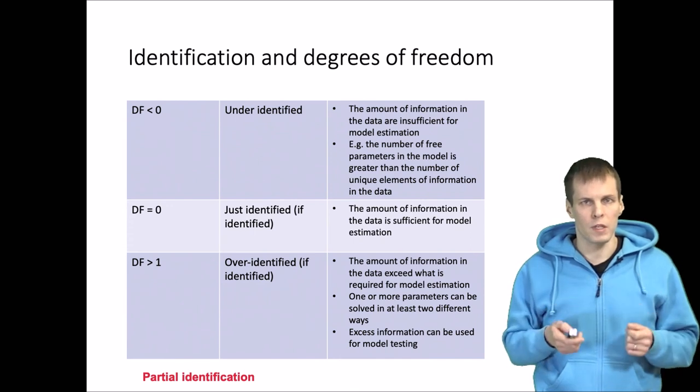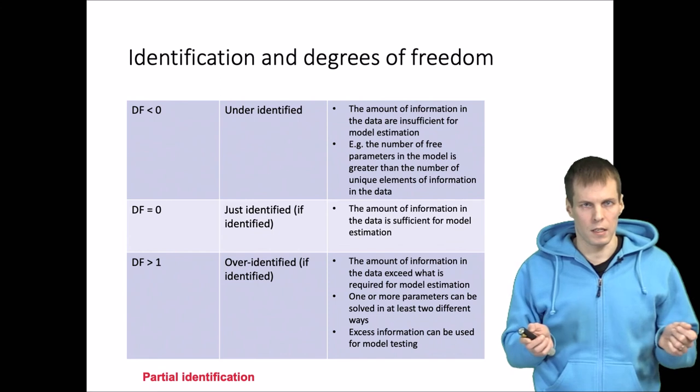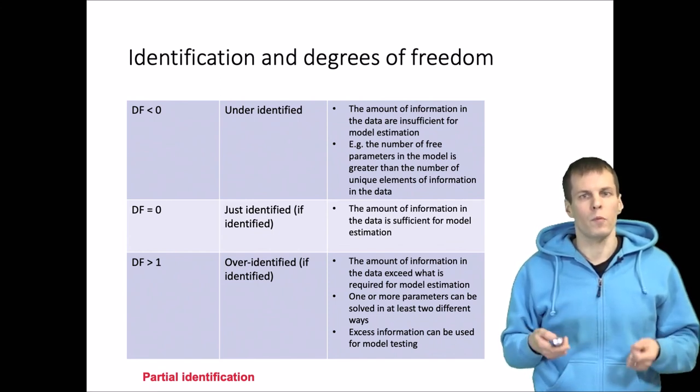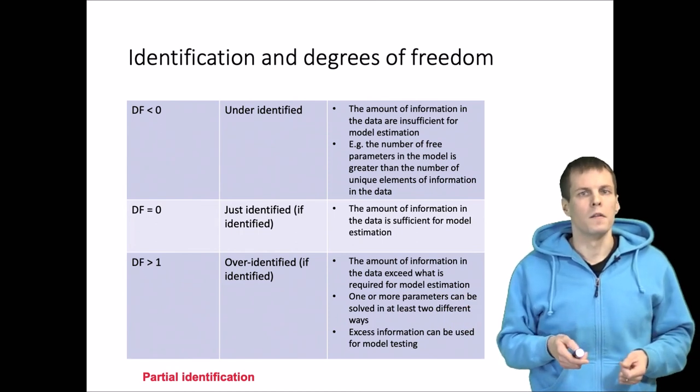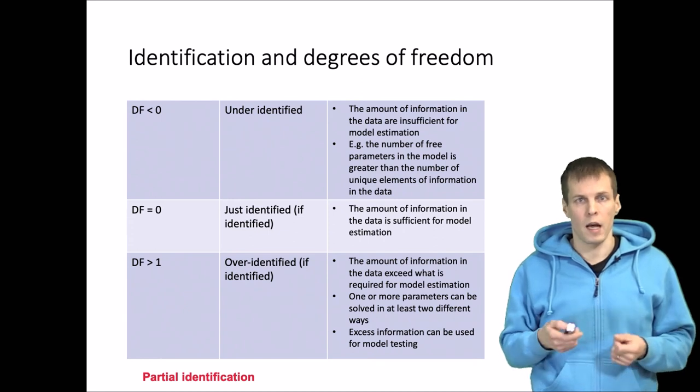If degrees of freedom is negative, that guarantees we cannot estimate. If the degrees of freedom is positive and we have established that the model is identified, then some parts of the model, but perhaps not all parts, can be tested.